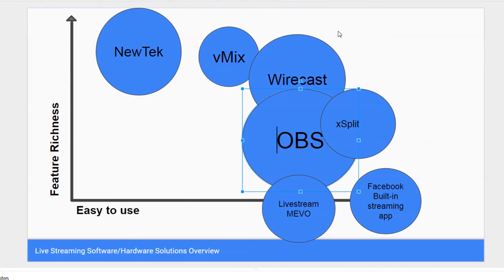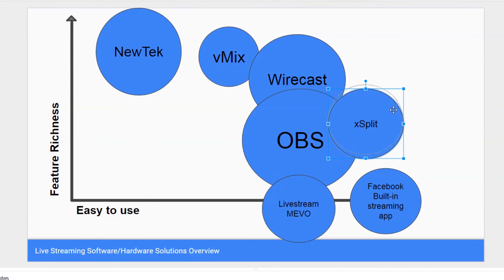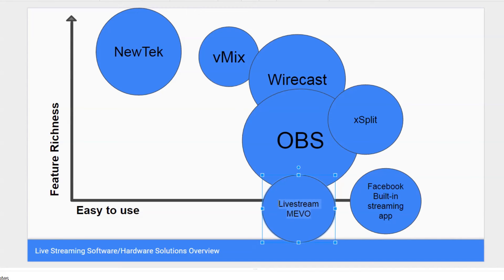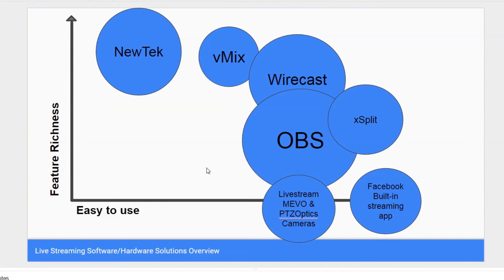XSplit is another Windows-only software that is easier to use than OBS and has more features, similar to how Wirecast compares to vMix. OBS works on Mac, PC, and Linux, while XSplit is Windows only. The LiveStream Mevo is essentially just a live streaming camera — you can also stream directly off PTZOptics cameras — but you don't get many features, just a very easy live stream. Facebook's built-in live streaming app has no features except chat integration, but you can select a webcam and microphone and stream to Facebook.